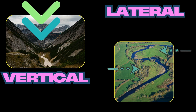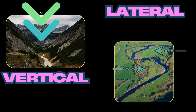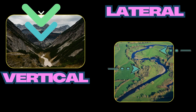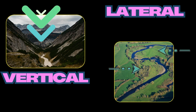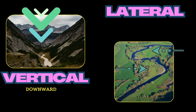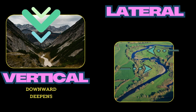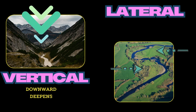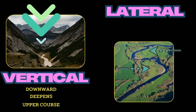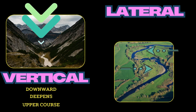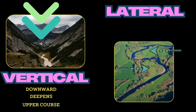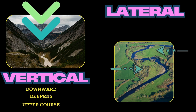One is usually dominant over the other at different points along the river's profile. Vertical erosion is downward — this deepens the river valley and channel, making it V-shaped. It's dominant in the upper course of the river, where high turbulence causes rough particles to scrape along the riverbed, resulting in intense downward erosion.